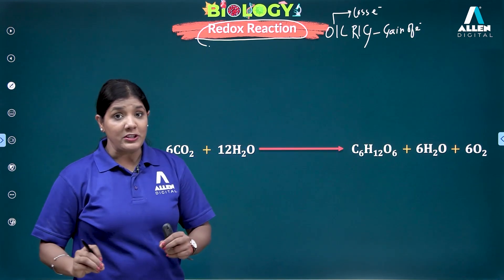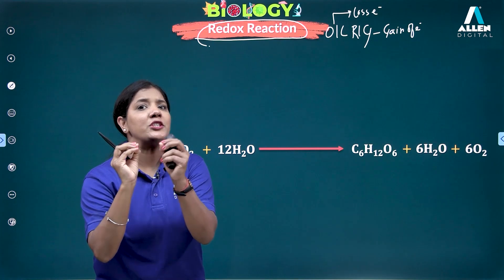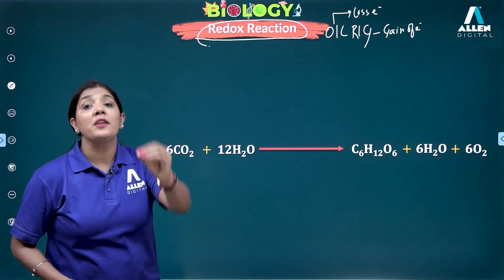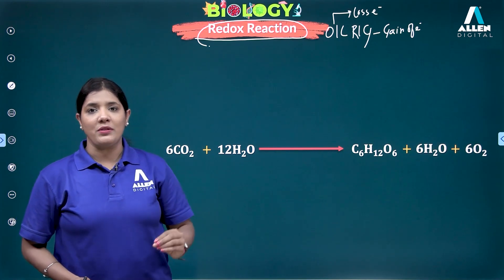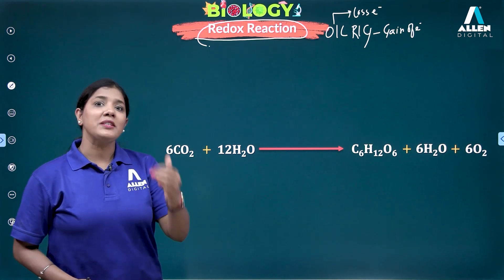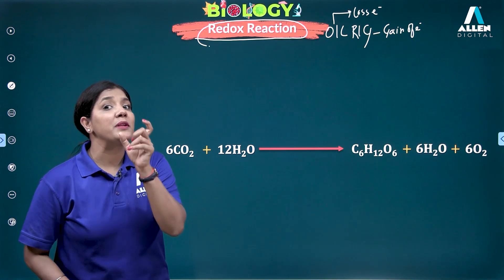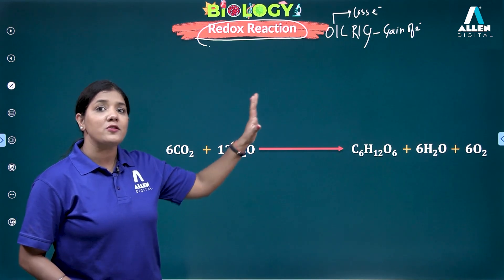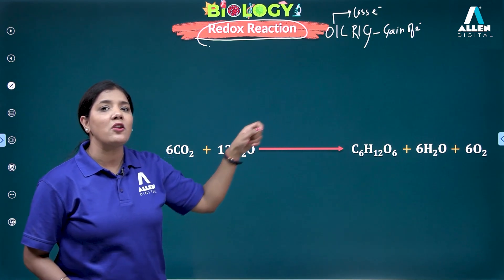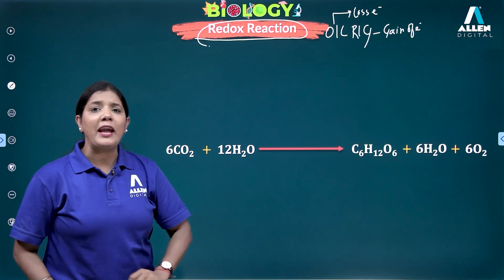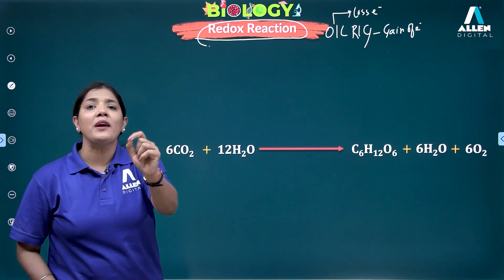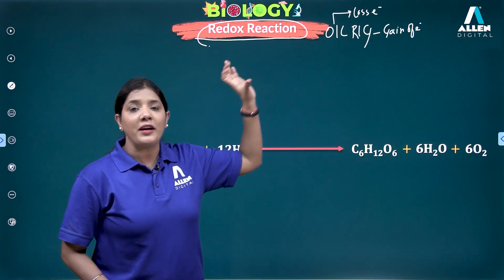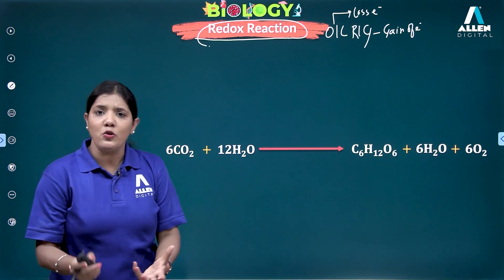Pay attention: whenever oxidation occurs, there is a loss of electron as well as a loss of proton (H+ ion). Whenever reduction occurs, there is a gain of electron as well as a gain of proton. So oxidation involves loss of both electron and proton, and reduction involves gain of both.